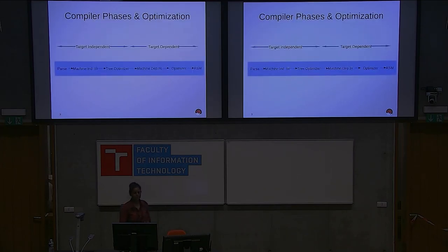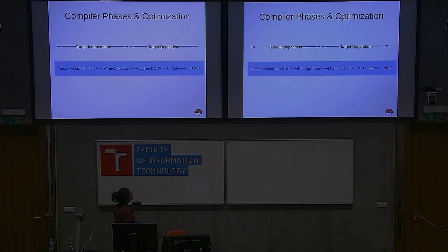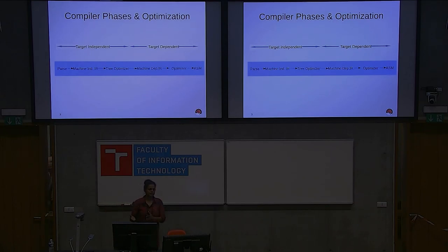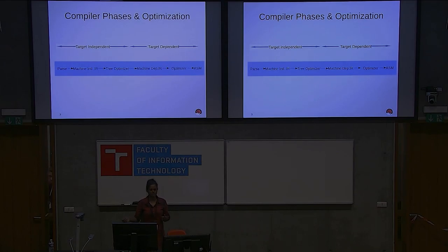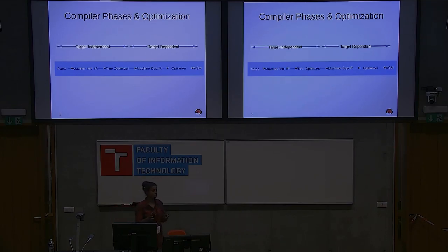Moving forward, since I'm going to start with the compiler optimizers, before I talk about the specific optimizers, let's look at the phases and how it works. When we write high-level language code, we compile it into an executable file. There are various phases during this process. First, it converts your code into some intermediate representations which are independent of your machine architecture.